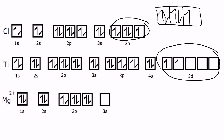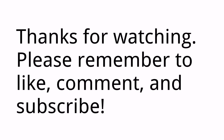For magnesium 2-plus: normally magnesium fills up to 3s², but having lost two electrons, we remove them from the highest energy orbital — the 3s — leaving an empty 3s shell. That concludes electron configurations and orbital diagrams.